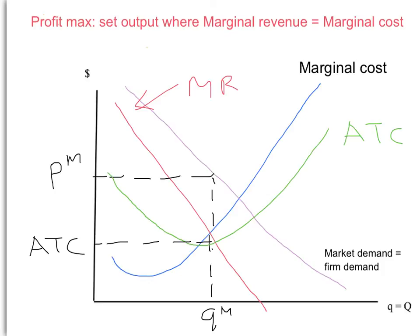The key takeaway is that for a price-setting firm — as opposed to a price-taking firm, like a monopoly, but actually this is a general result for any firm that sets the price — if it faces a downward sloping demand curve for its product, then the marginal revenue curve will be below the demand curve and steeper than the demand curve. When the business sets its profit-maximising quantity, it sets that quantity where marginal revenue equals marginal cost, and then sets the highest price it can sell its output for — that maximises the business's profit. That's our profit-maximising solution for the monopoly. Thanks for listening; we'll start analysing the consequences of monopoly behaviour in more detail in our next presentation.